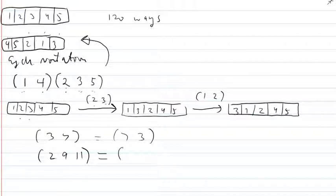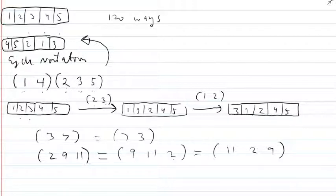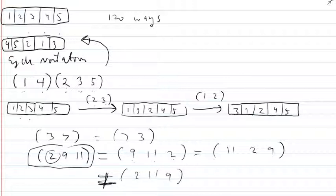But order matters in a 3-cycle. (2 9 11) means 2 goes to position 9, the thing in 9 goes to position 11, and the thing in 11 goes to position 2. Although order matters, some orderings are equivalent: (9 11 2) and (11 2 9) describe the same cycle, because in each one 2 goes to 9, 9 goes to 11, and 11 goes to 2. But (2 11 9) is not the same thing. I like to describe cycles with the smallest number first, though it would also be accurate to use one of those other equivalent forms.